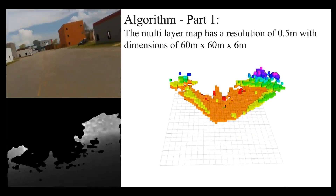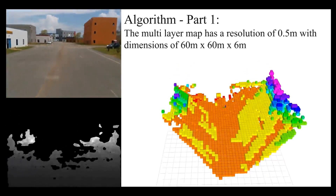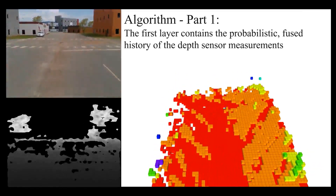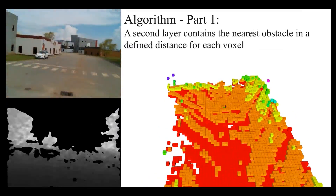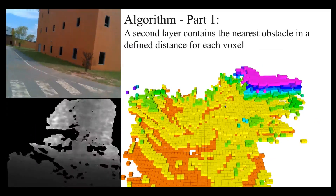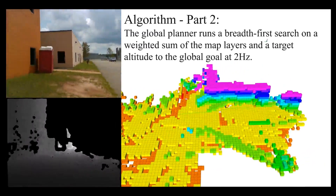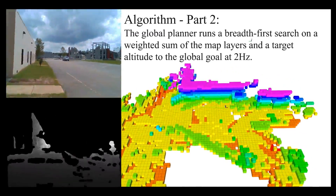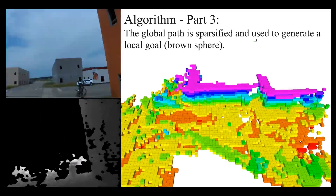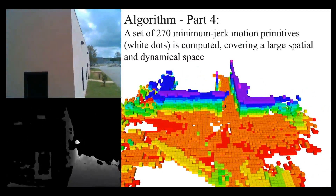The multi-layer map has a resolution of 0.5 meter with a dimension of 60 by 60 by 6 meters. The first layer contains the probabilistic fused history of the depth sensor measurements. A second layer contains the nearest obstacle within a defined distance for each voxel. The global planner runs a breadth-first search on a weighted sum of the map layers and a target altitude to the global goal at 2 Hz. The global path is sparsified and used to generate a local goal — see the brown sphere.